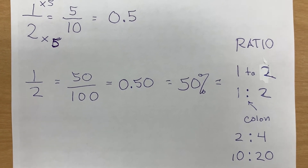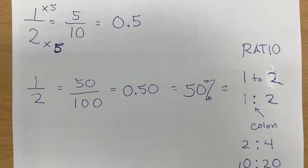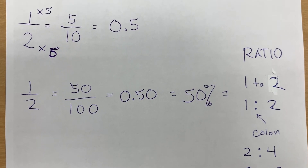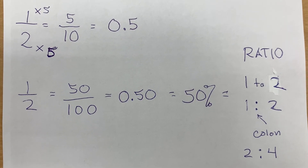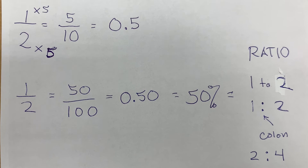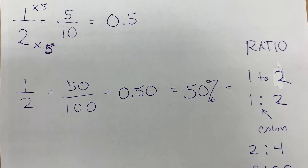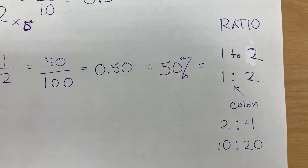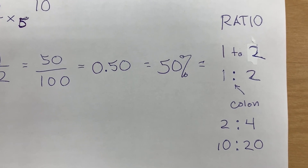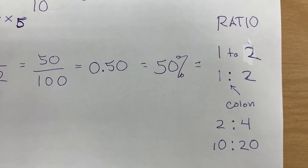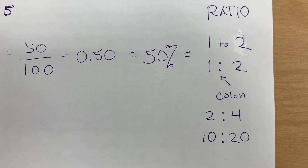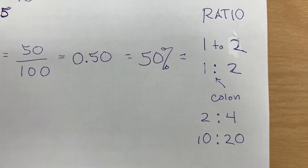So now we have one half equals 50 over 100. We multiply the two by 50 and the one by 50; it becomes the decimal 0.50 because 0.50 stands for 50 over 100. And remember the percent sign — 50 percent is really 50 over 100. The final piece is called the ratio. It tells us what the two numbers are related to. So one to two — one half — one to two. The two dots is called a colon; that's another way you can write a ratio.